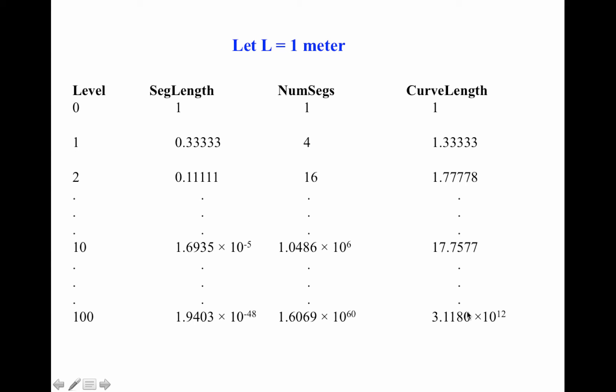Why is that? Well, the reason is that each time we're dividing the segment length by 3, but we're multiplying the number of segments by 4. So the number of segments is going up faster than the segment length is going down.